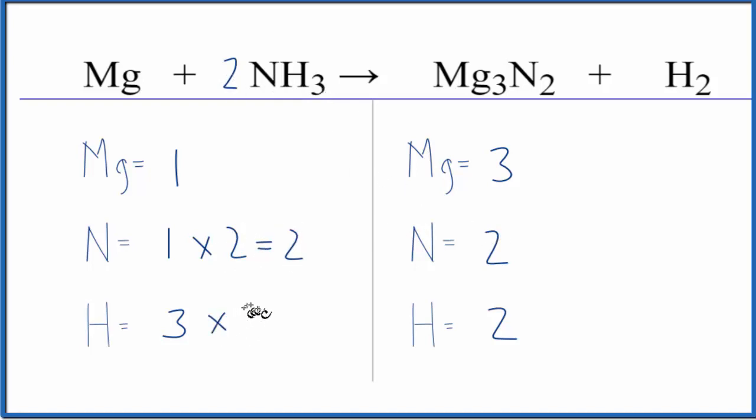Three times two, that'll give me six hydrogen atoms. But that's good, because now this is an even number. If I want to get six hydrogen atoms here, coefficient of three, two times three, that gives me six. Those are balanced.